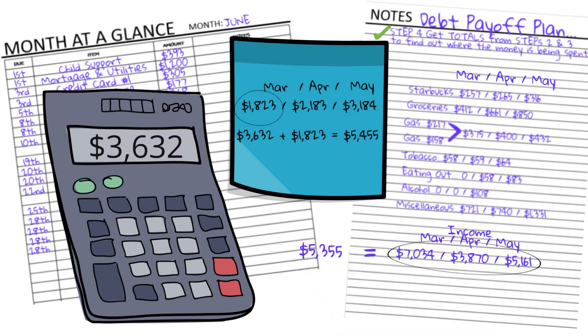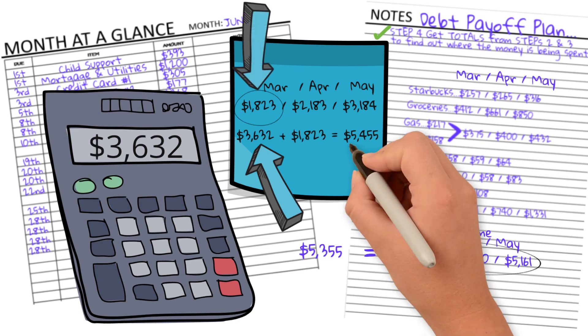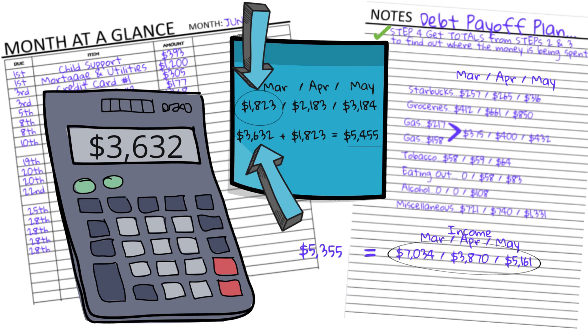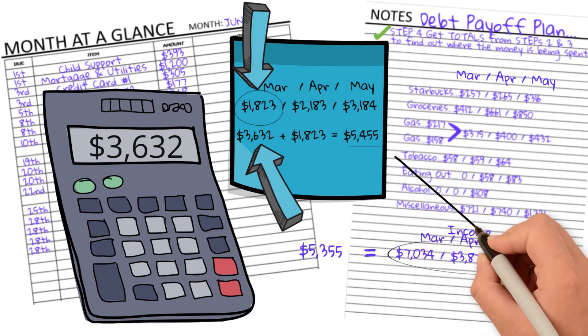If I total fixed expenses of $3,632 and add that to the March pattern of behavior of $1,823, I get $5,455. And if I look at our income history, I can see I'm in the window. These numbers are realistic.